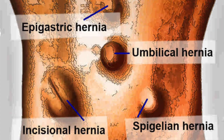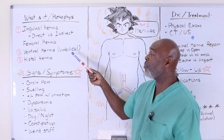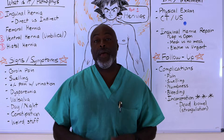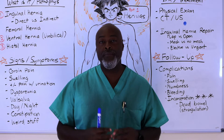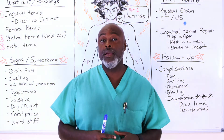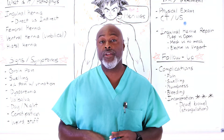A ventral hernia is any hernia that comes out of the anterior abdominal wall — that includes umbilical hernias, hernias around the falciform ligament, and hernias from surgery or open exploration. A hiatal hernia is a completely different issue that has nothing to do with the abdominal wall, but it is still a hernia. A hernia by definition basically means there's a hole in a fascial plane and something is sticking through it.